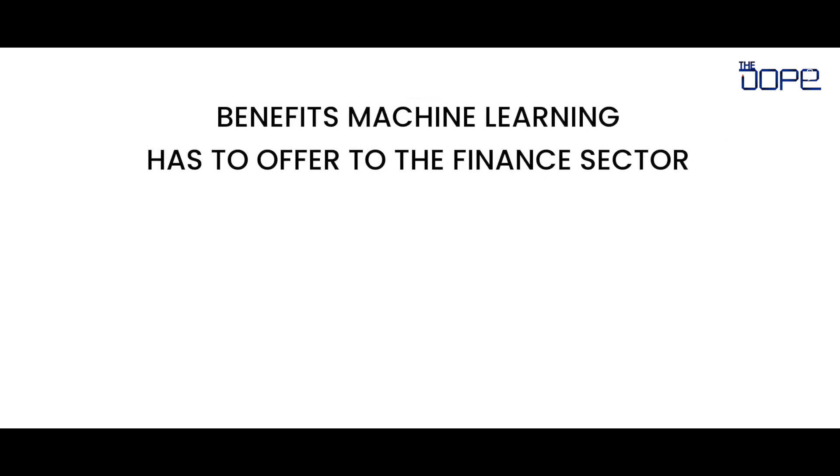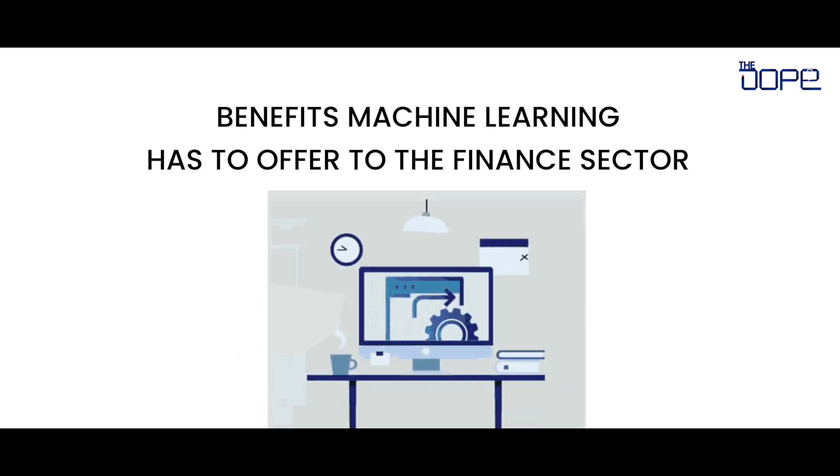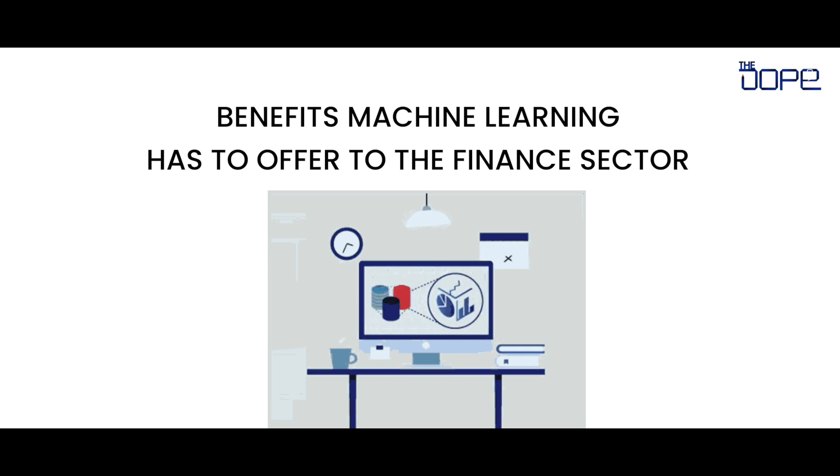There are several benefits machine learning has to offer to the finance sector. Automation of process is one of the most common uses of machine learning in the finance sector. It has made it possible through automation to replace manual work and duplication of tasks, thus increasing productivity. Chatbots, paperwork automation, and call center automation are some examples of process automation by machine learning.